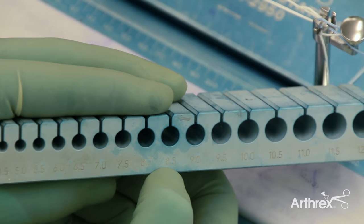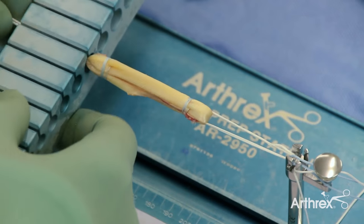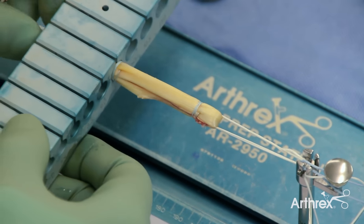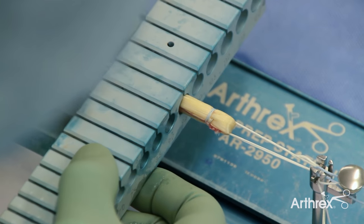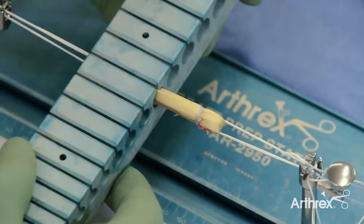We then use the sizing block. Nine can be seen to be a little tight, but the graft link is seen to be passing through the 9.5mm sizing slot. So for this case, we will need to use a 9.5mm flip cutter.